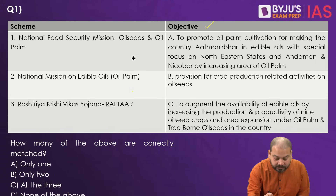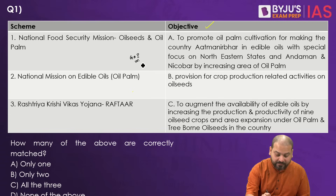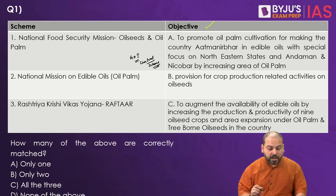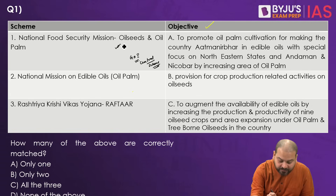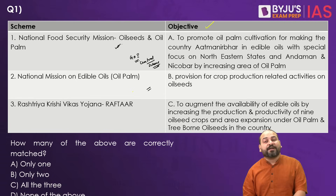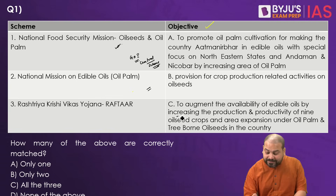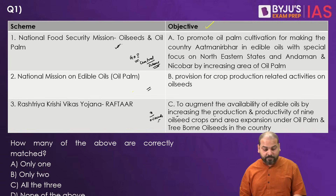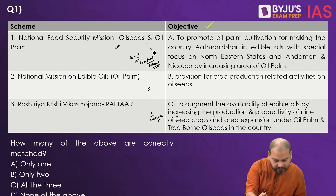The government of India has started these schemes — these are centrally sponsored schemes. The first one is basically to augment the availability of edible oils by increasing the production and productivity of nine oil seed crops and area expansion under oil palm. So the objective of the first scheme is here.